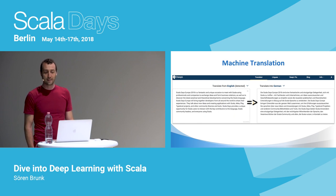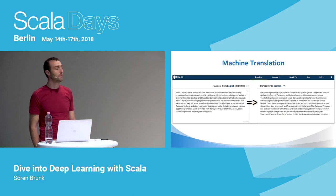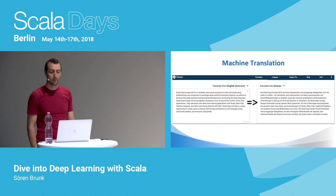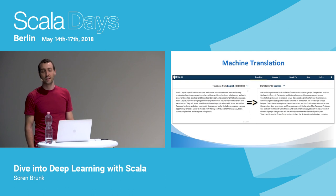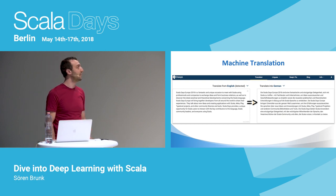The last example I want to show is machine translation, which has also seen tremendous improvements over the past years. Here we see the description from the ScalaDays website translated to German using state-of-the-art deep learning techniques. It's not perfect, but if you understand German, you'll agree it's still a pretty good translation.